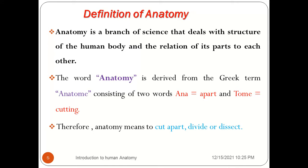The word 'anatomy' comes from the Greek word consisting of two parts: 'ana' meaning apart, and 'tom' meaning cutting. So anatomy is the science in which we study the structure of the human body by cutting apart or dissecting. Anatomy means to cut apart, divide, or dissect.